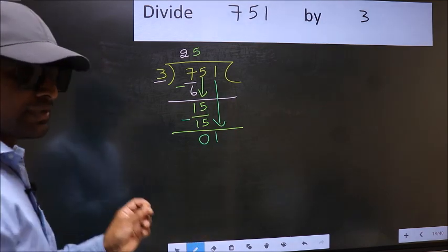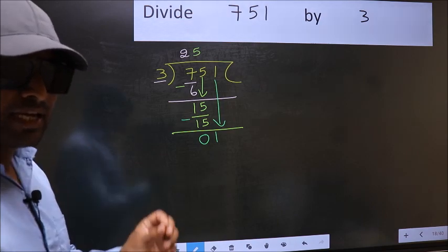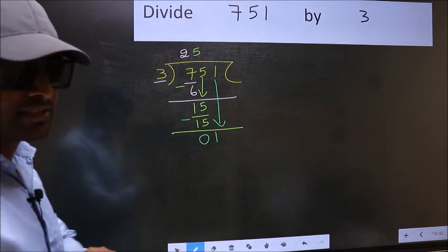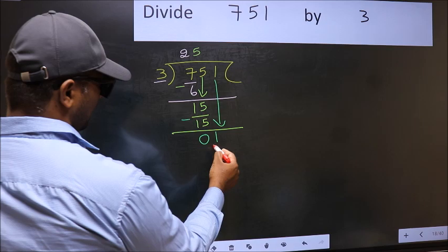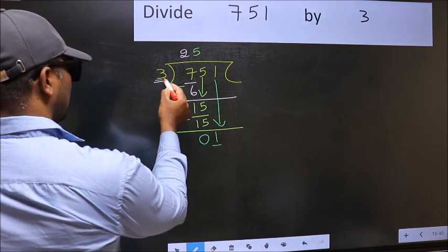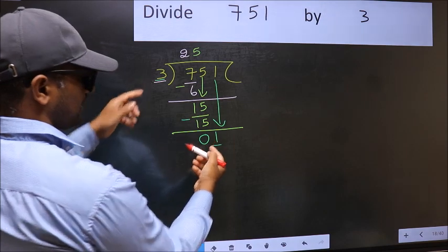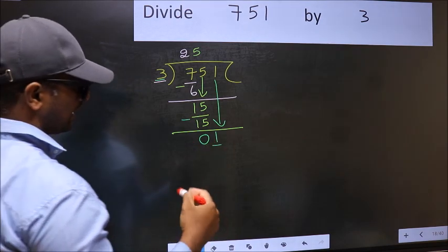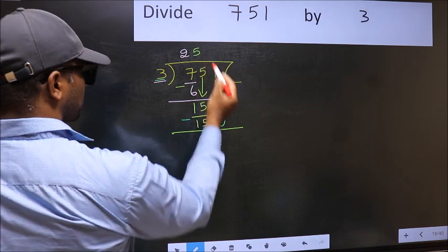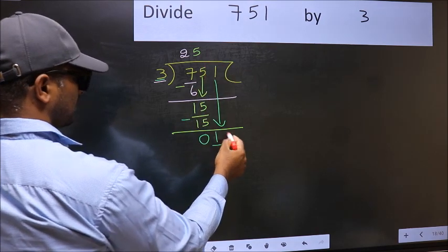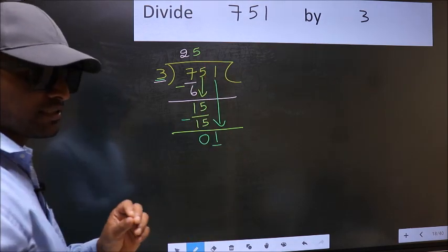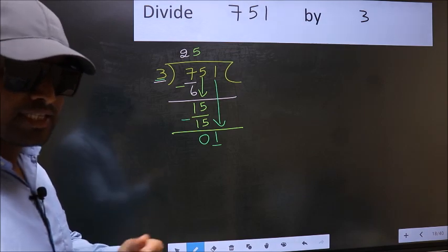After this step, the mistake happens. And the mistake is this. Here we have 1 and here 3. 1 is smaller than 3. So what many do is they directly put a dot and take 0 here,